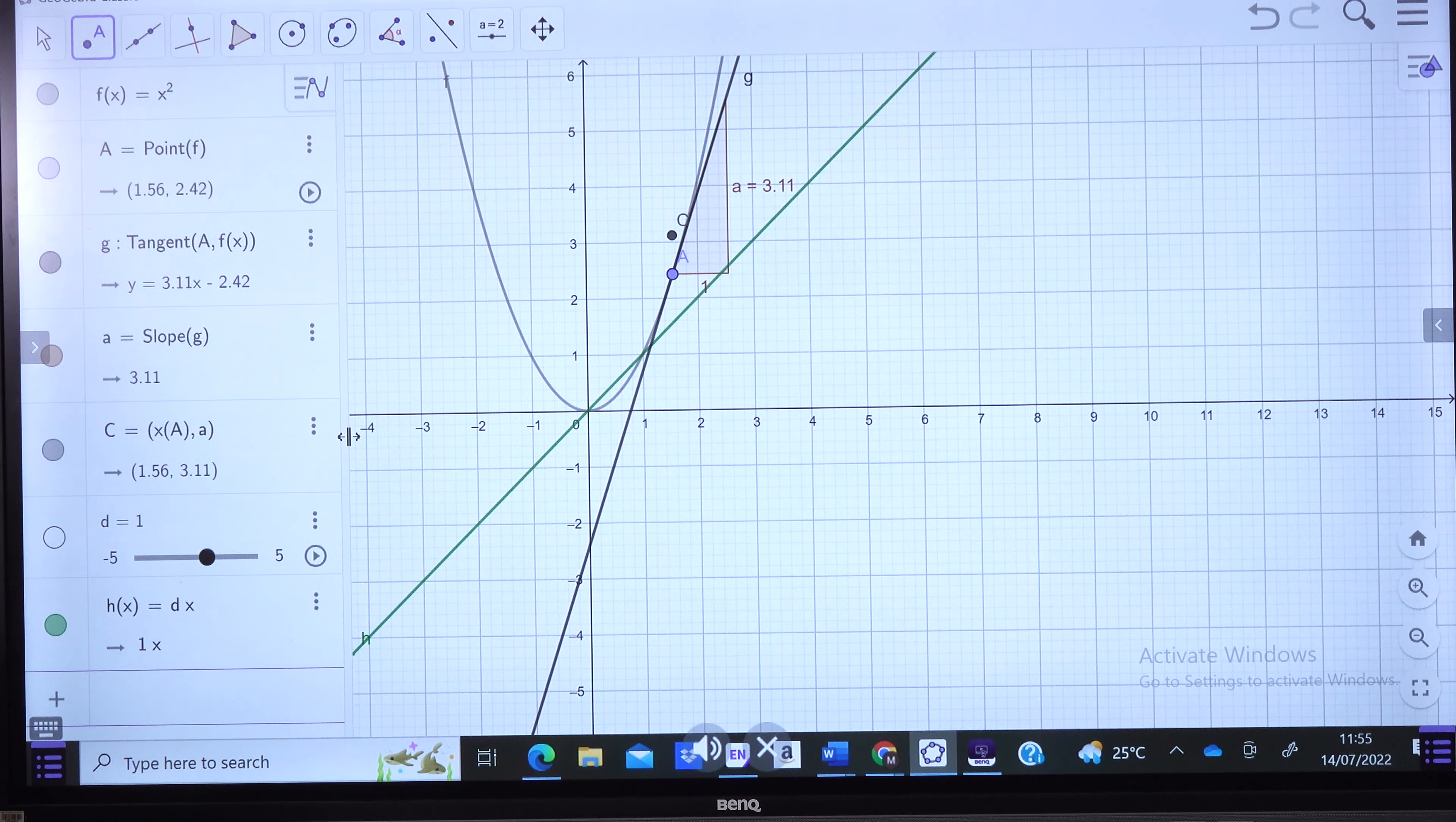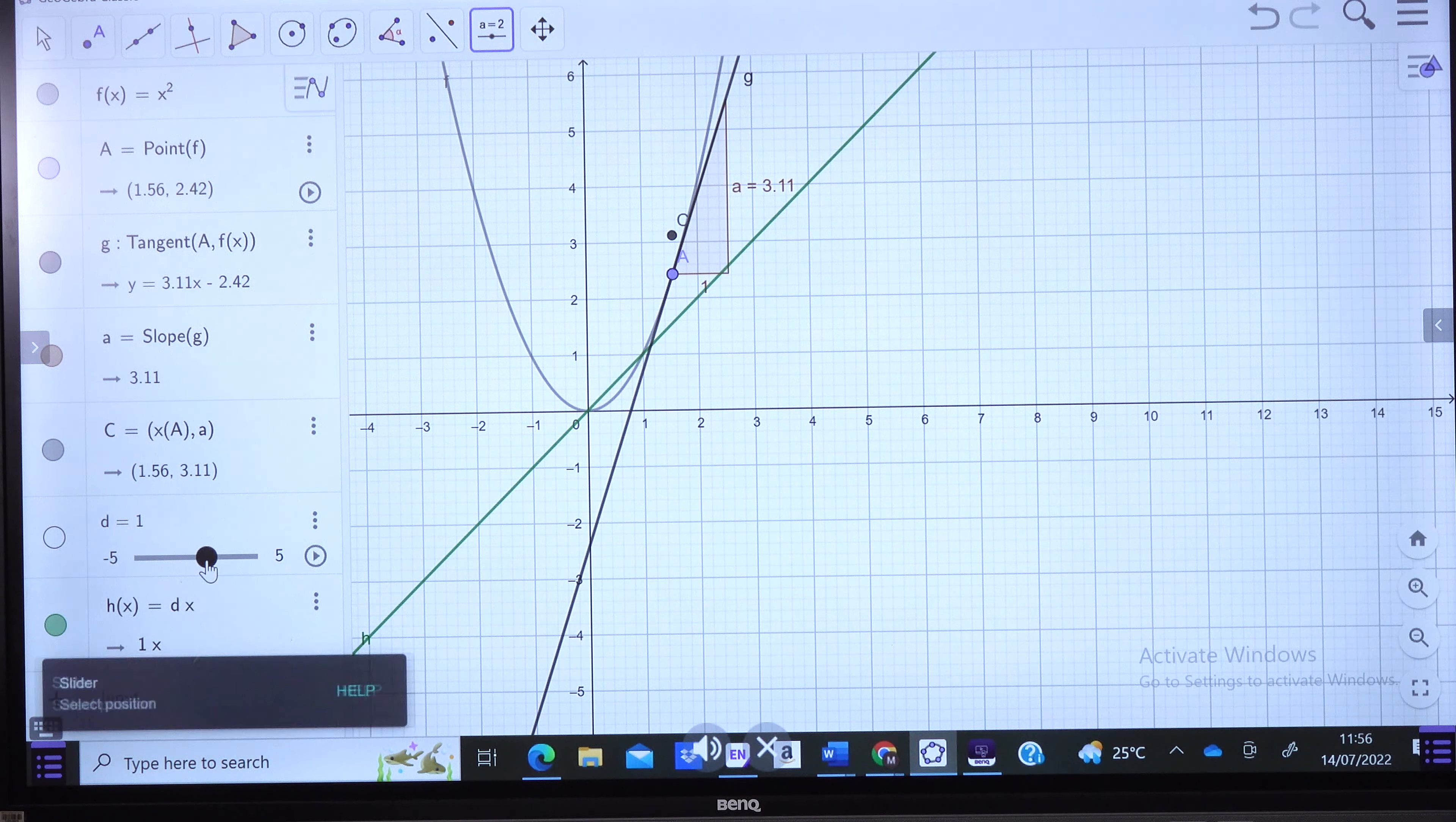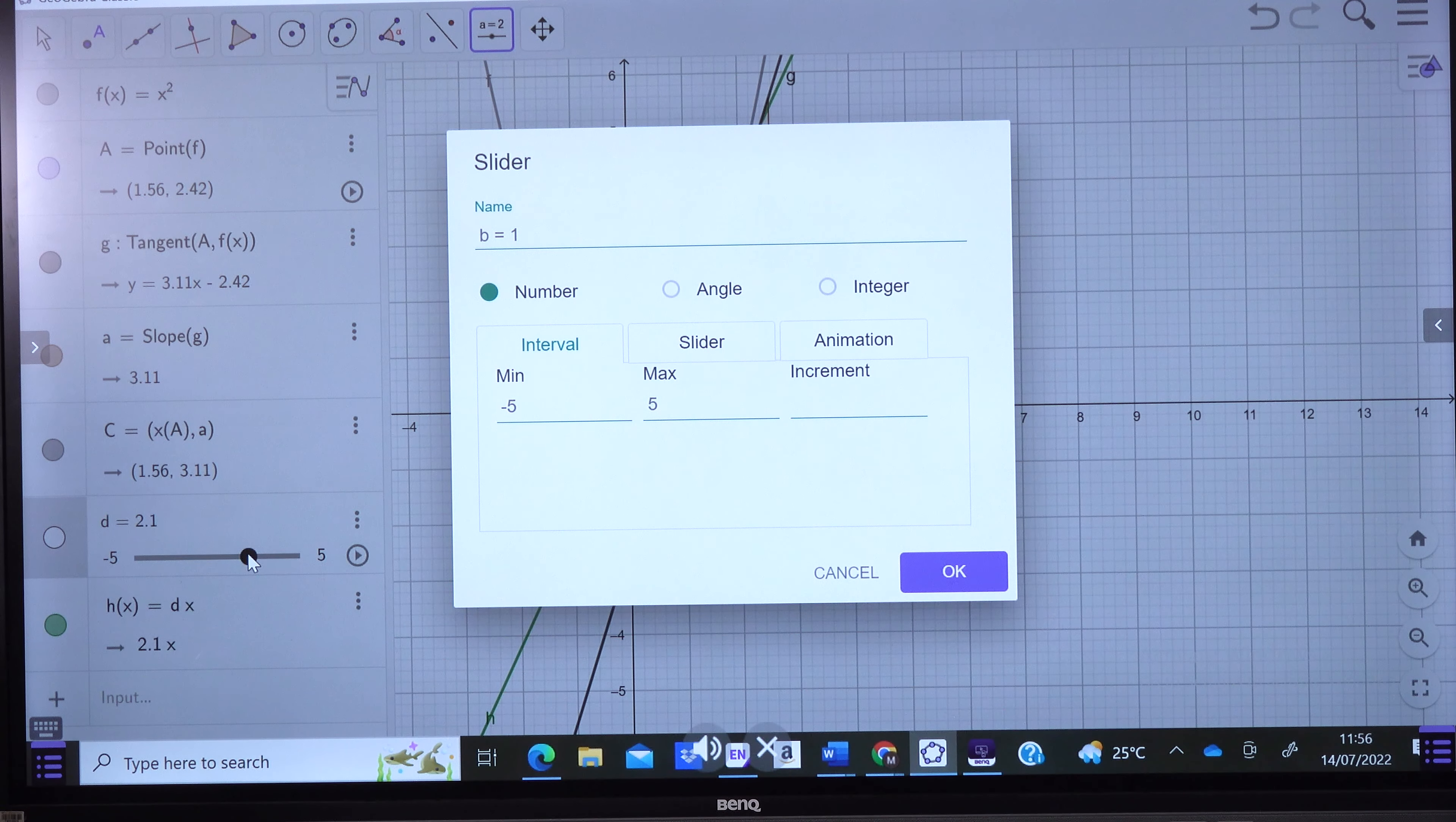And now, if we try to make this line pass through point C, we are going to have our inverse function. I want you to take note of this and see and take the reading of our inverse function. When we slide this, the line is going to move. That line of h of x will be moving. Now, when we superimpose it at point C, we will see that